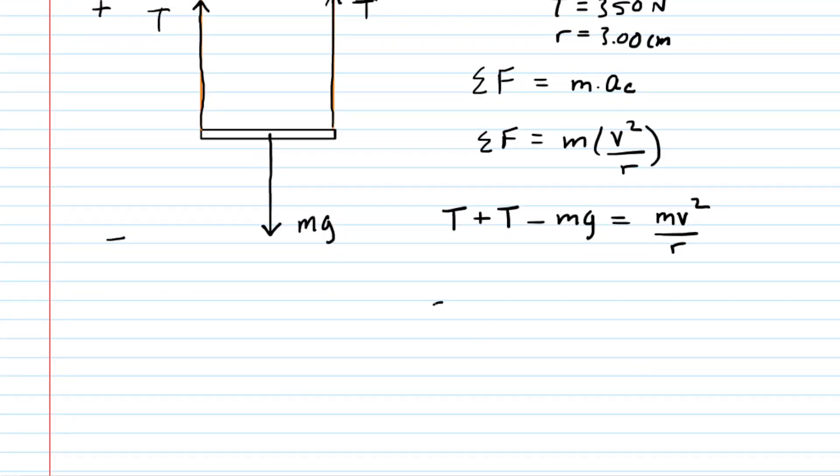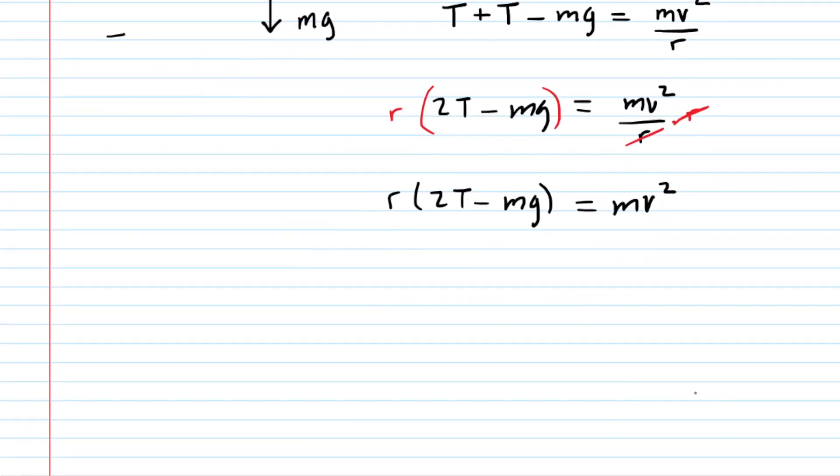The left side of this equation can be simplified. We can write it as 2T minus Mg. And then because we're trying to solve for the speed, we can actually multiply both sides of this equation by the radius, R. That will allow it to cancel on the right-hand side. Next, we will divide both sides of the equation by the mass, M. This is the mass of the child. That'll cancel it on the right-hand side.